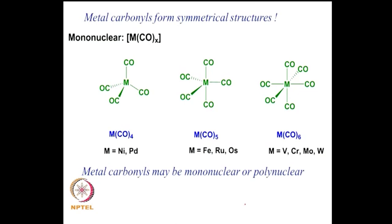Metal carbonyls tend to form reasonably symmetric structures. Typical examples are nickel tetracarbonyl — which chemists often encounter first because it is easy to synthesize — and chromium hexacarbonyl, which has a nice octahedral geometry. The carbon monoxide ligands are symmetrically distributed around the metal, and this seems to be a hallmark of the type of compounds formed by metal carbonyls.